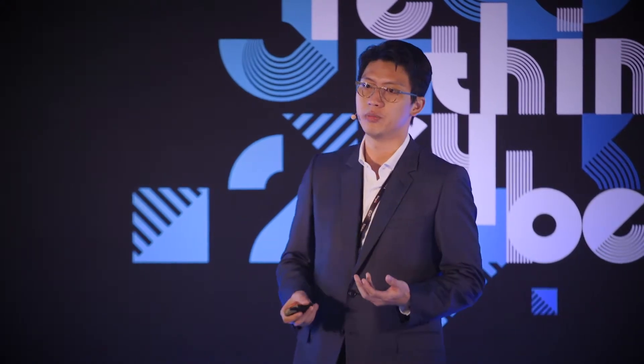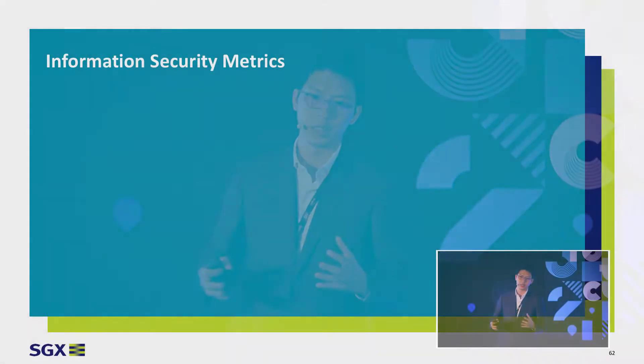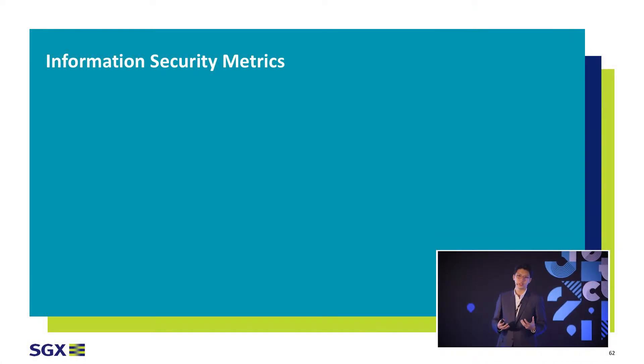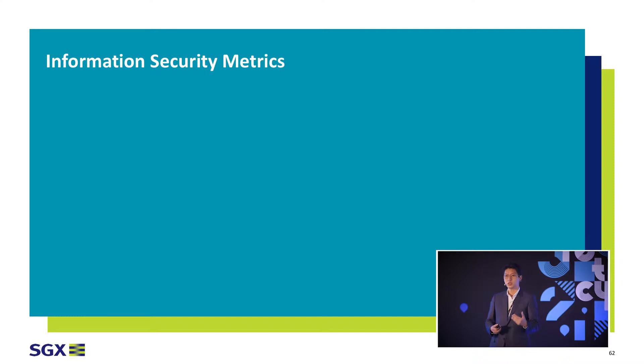So what exactly do we see as an information security metric? When you peel away the layers, a metric is essentially just a set of numbers — a standard unit of measurement. It's something that's got to be consistent, repeatable, and tangible.